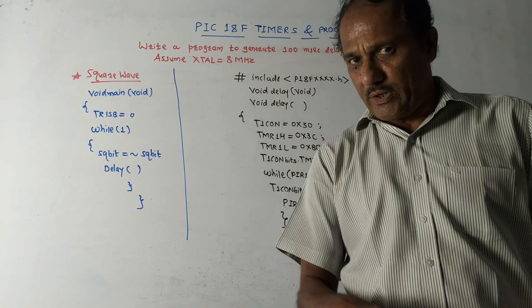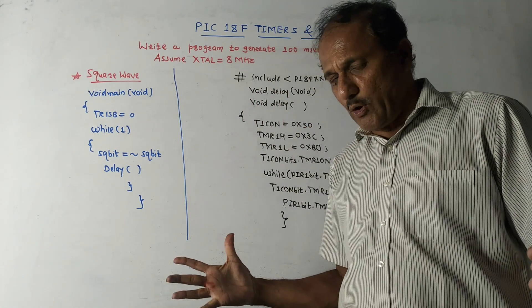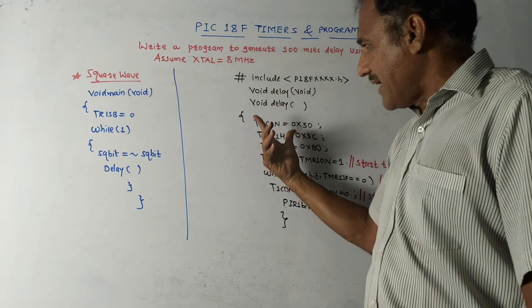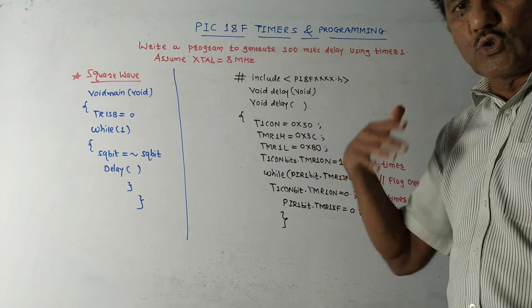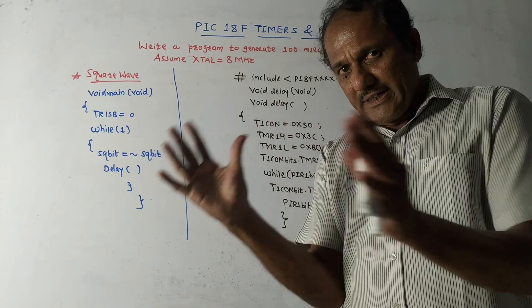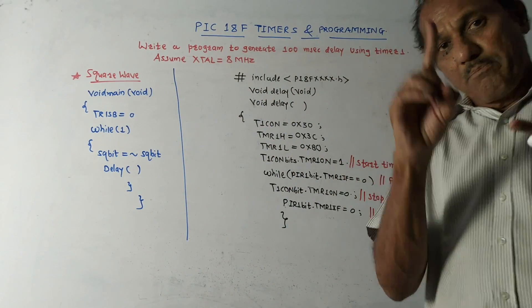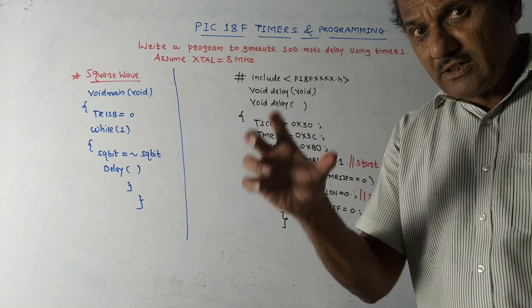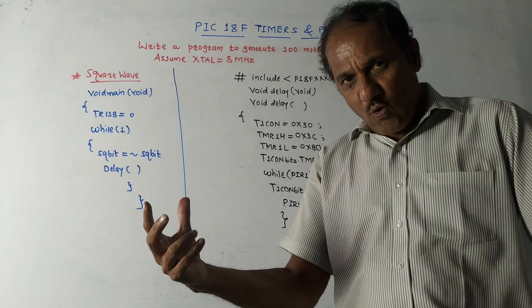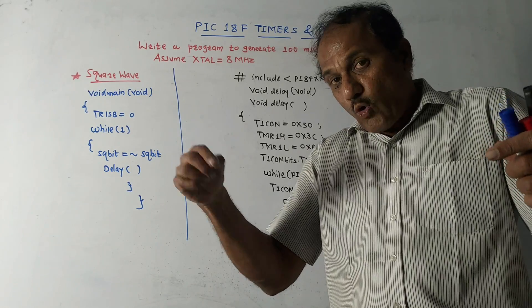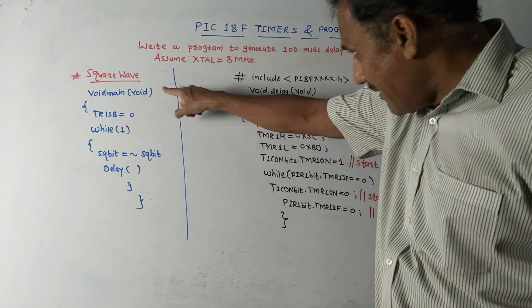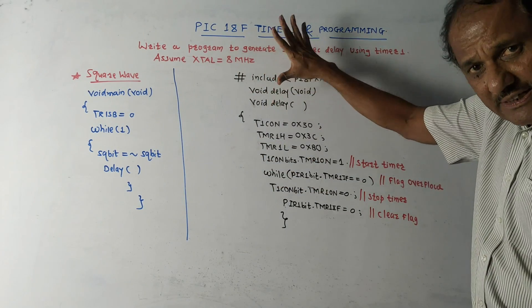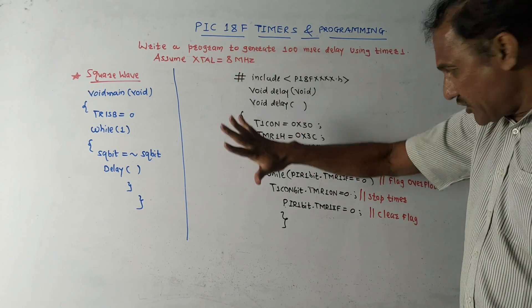We need to clear the flag using this instruction. This is the common delay program. The changes would be: the loaded values will change; instead of using Timer 1 it will be mentioned to use Timer 0 or Timer 2 and accordingly a few instructions will be changed, but the calculation of delay remains the same. Suppose we want to write a program which will generate a square wave at the output of Port B - here the main program is shown.